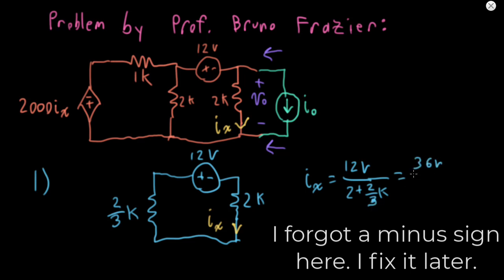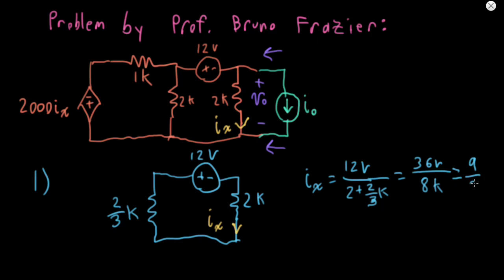That's 36 volts over 8K, which simplifies to 9 over 2 milliamp. Notice that the arrow is coming out of the minus sign here, so I actually need to put a minus sign. I'll put a superscript 1 here to remind myself this isn't the full IX — this is only the contribution to IX from this 12-volt source. So IX1 is equal to minus 9.5 milliamp.